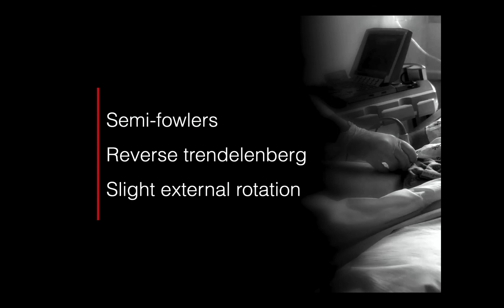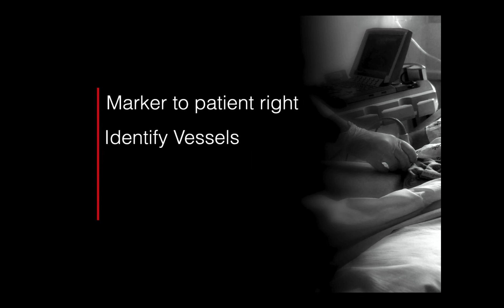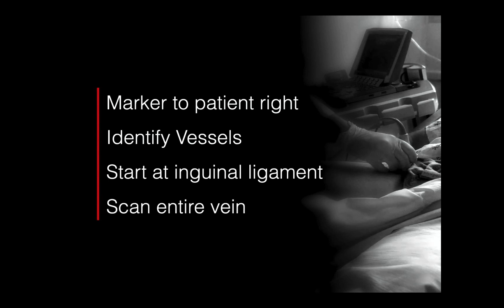Position the patient in the semi-Fowler's position or reverse Trendelenburg — get the head up above the level of the legs to allow gravity to pull blood down into the vessels and distend them. Externally rotate the patient's legs to open up the inguinal canal area. With the probe marker towards the patient's right, identify the vessels and scan from the inguinal ligament all the way down through the popliteal fossa, performing compression every several centimeters to confirm venous patency.